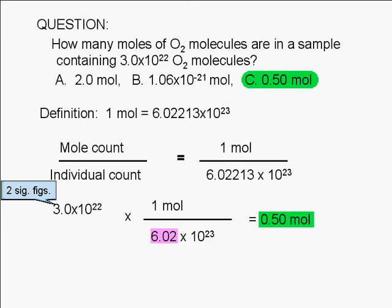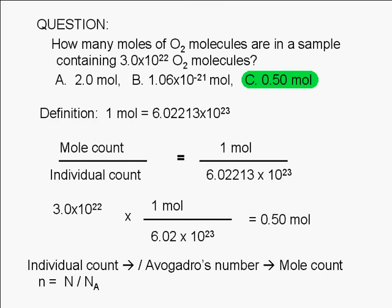To summarize, if we want to convert an individual count to a mole count, we simply divide the individual count by Avogadro's number. If capital N is the individual count, we divide it by Avogadro's number to get the mole count.